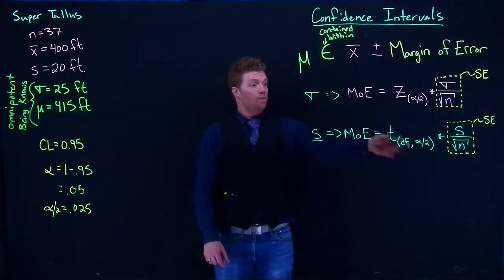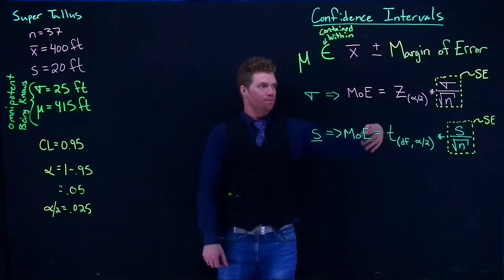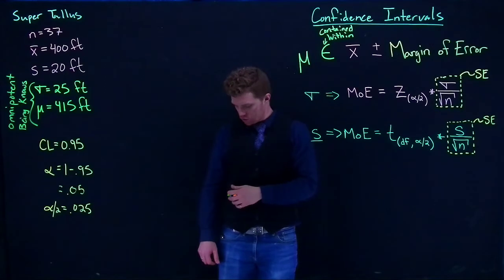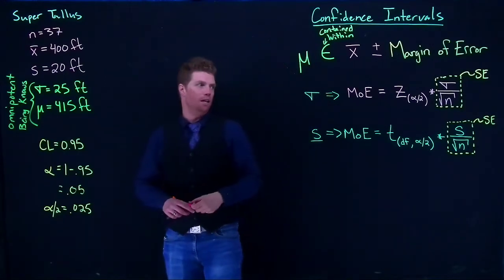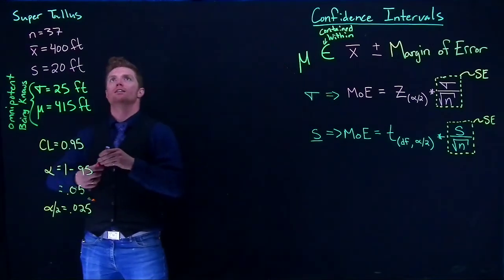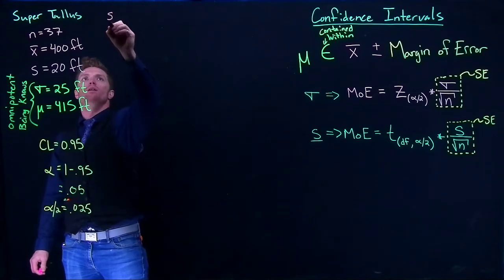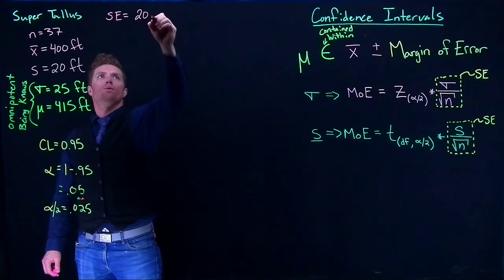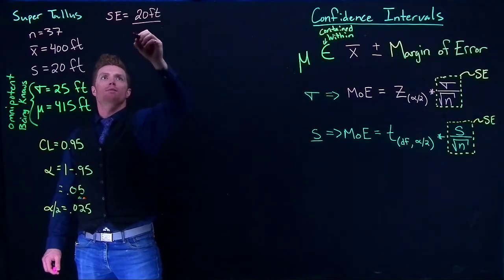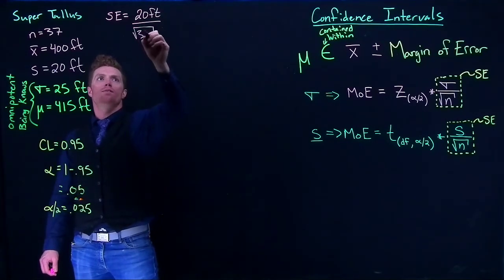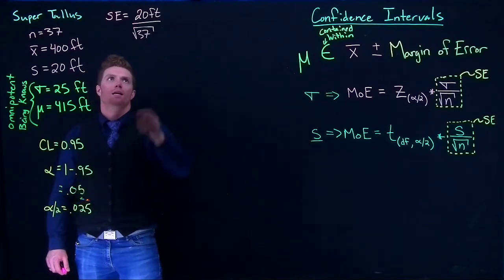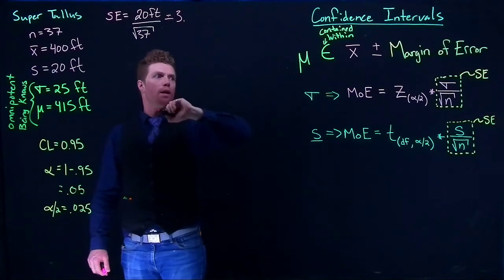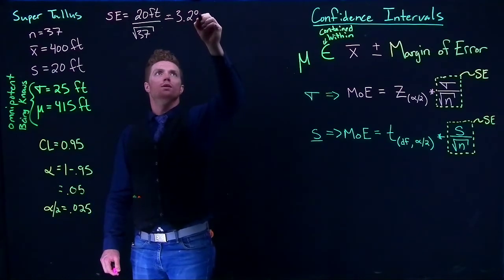So now that we've got this new equation, we can go ahead and do our calculation. So let's start off with calculating our new standard error. So we have the standard error, and that's going to be equal to 20 feet divided by the square root of 37. And if we do that, our standard error that we get is 3.29.